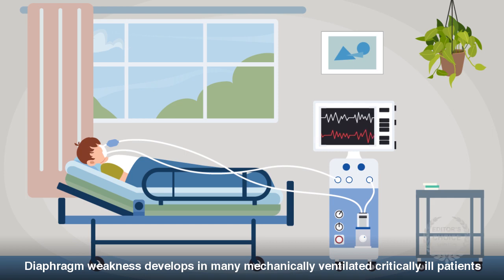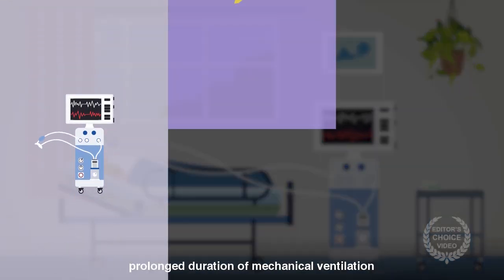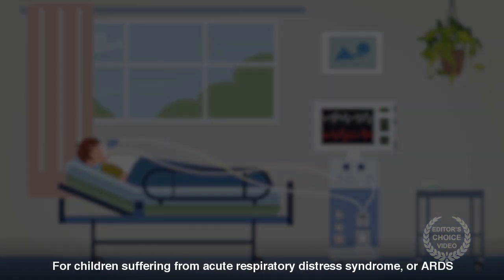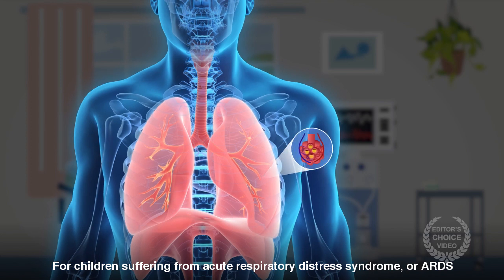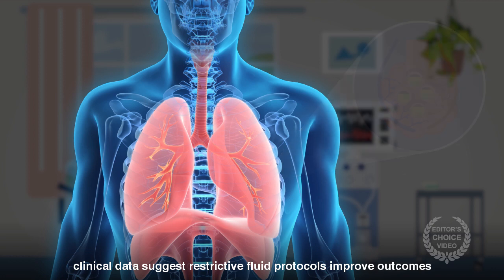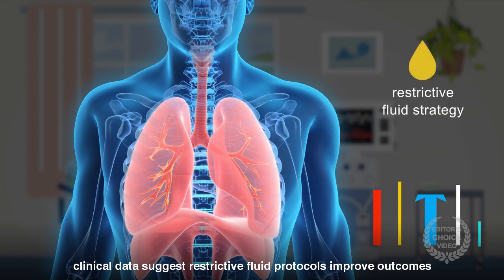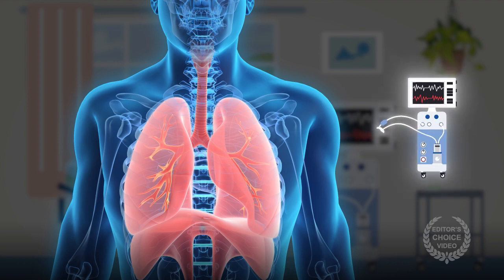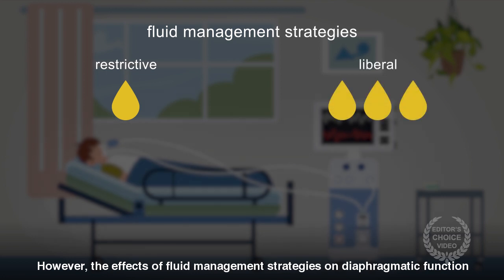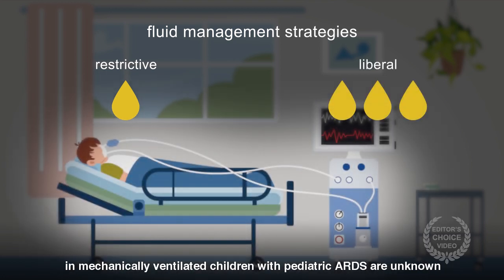Diaphragm weakness develops in many mechanically ventilated, critically ill patients and may be associated with difficult weaning, prolonged duration of mechanical ventilation, and even an increase in mortality. For children suffering from acute respiratory distress syndrome or ARDS, clinical data suggests restrictive fluid protocols improve outcomes, such as weaning from the ventilator. However, the effects of fluid management strategies on diaphragmatic function in mechanically ventilated children with paediatric ARDS are unknown.